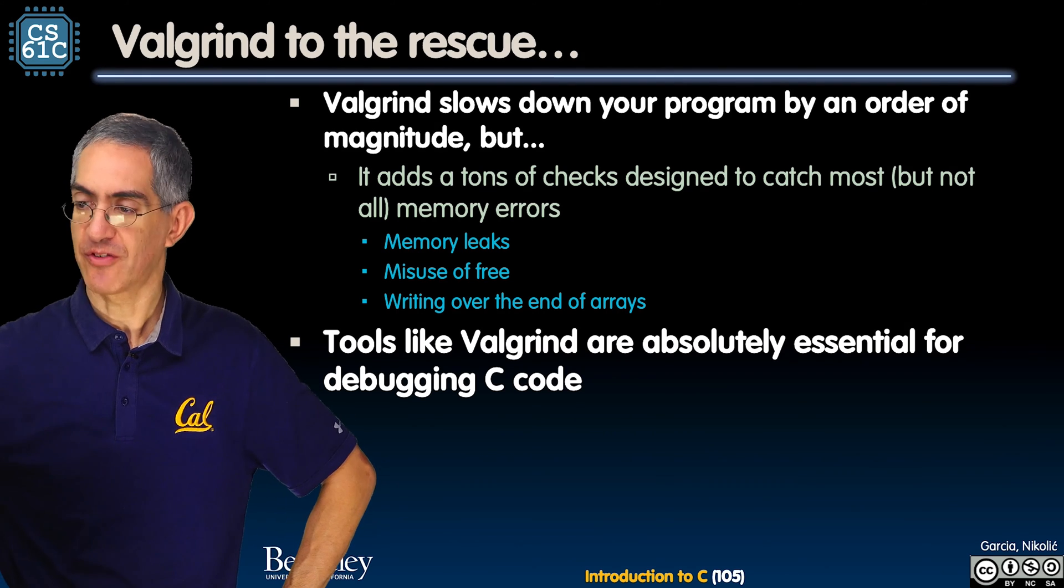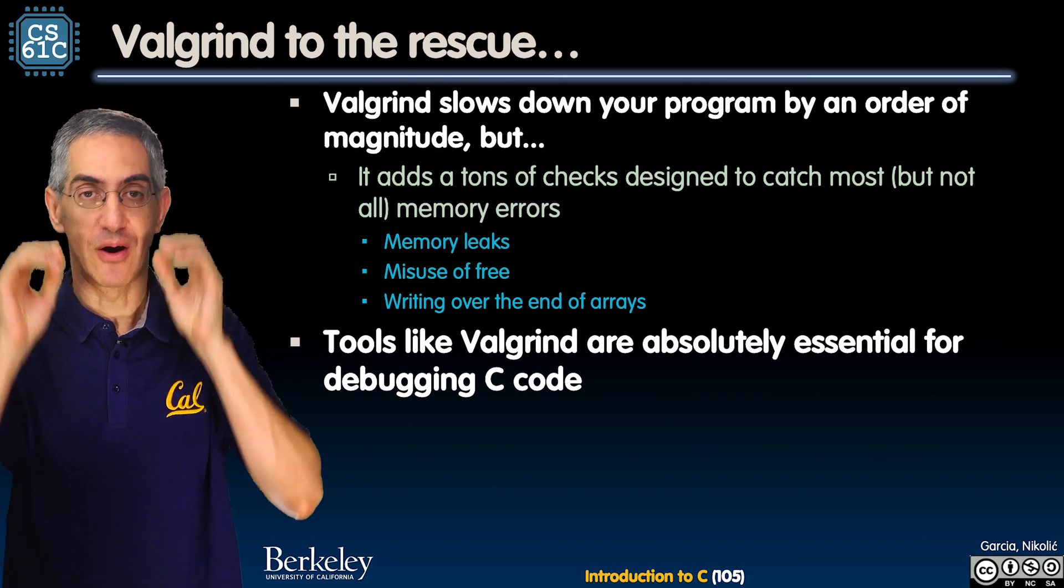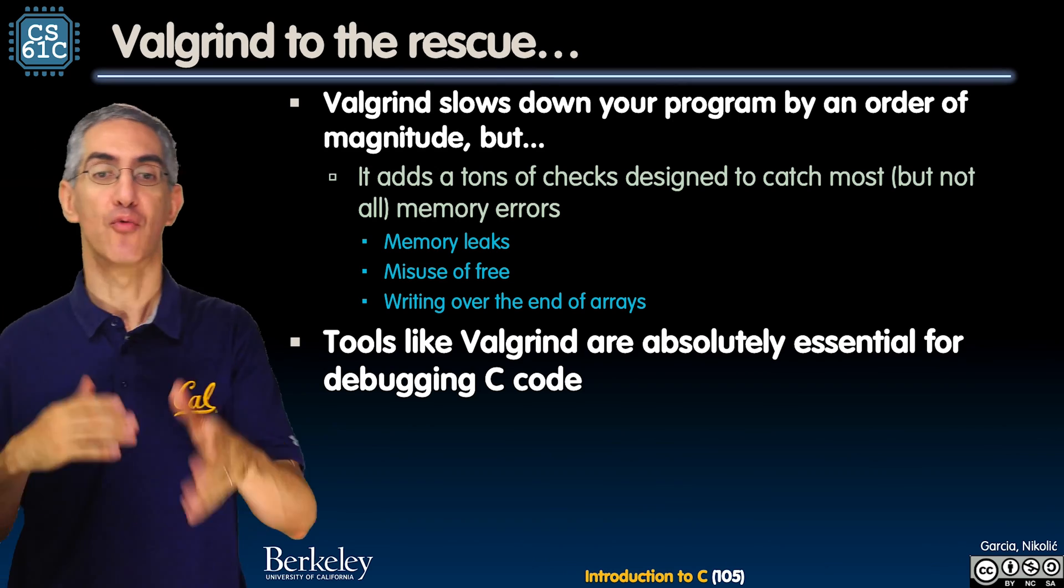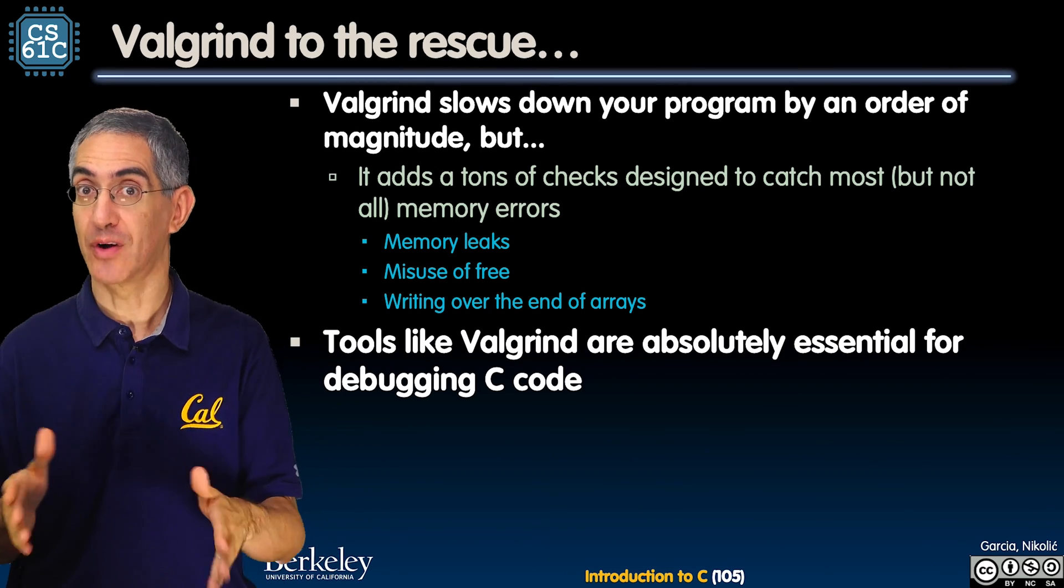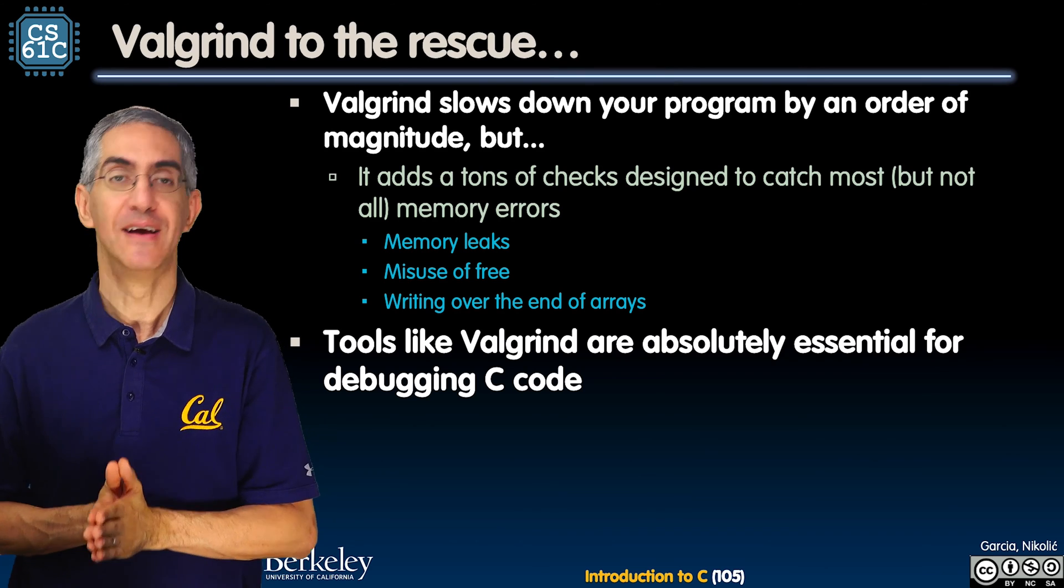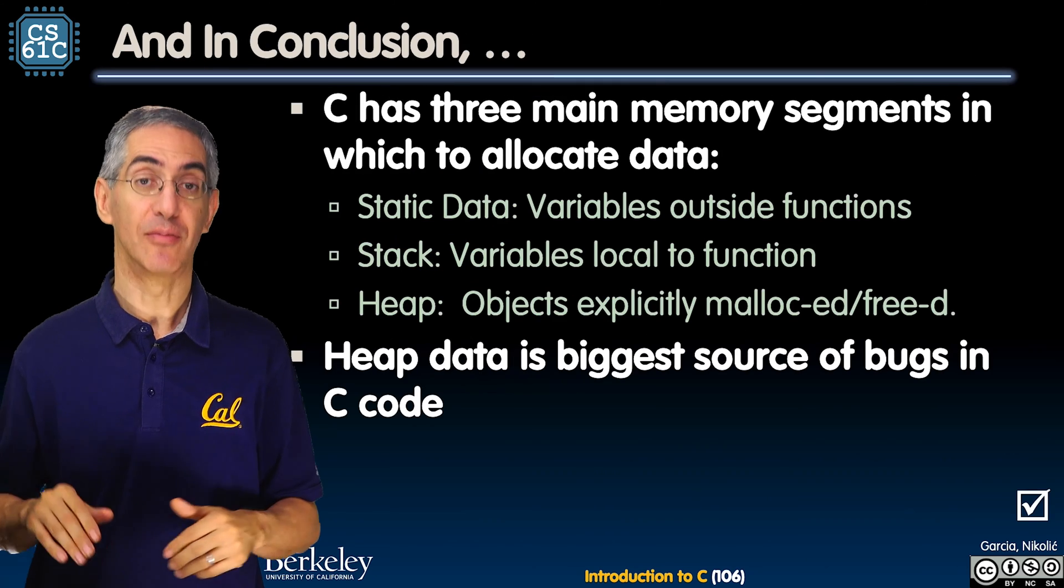Boy, I wish there were something that helped me with this. There is. Valgrind is a wonderful piece of software that will check for these things. Valgrind will check for memory leaks, misuse of free, writing over the end of arrays. Valgrind is really good about looking at your static code and deciding what it's going to do and what are some of the problems it's going to have. It's essential for debugging C code. I believe it's available in the labs.